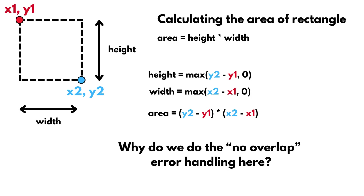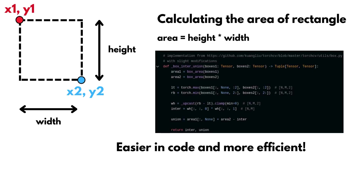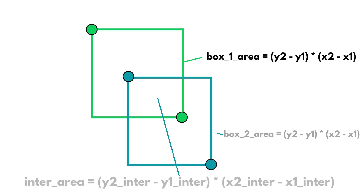You might ask why we are jamming this check in the area calculation and not when we are checking the top left and bottom right values. The reason is that it's much simpler to implement in code, and we can batch a lot of bounding box calculations without worrying about performance. If one of the values for height or width is negative, it will directly set the whole area to zero, so it will bring the IOU to a correct answer without tedious if-checking.